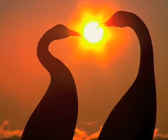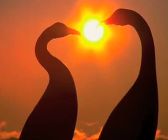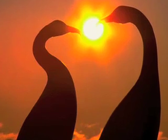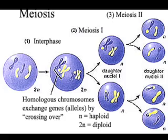In asexual reproduction, a parent cell or organism produces offspring through the cell division process of mitosis. However, a eukaryotic species may also be capable of sexual reproduction, which requires meiosis, a process in which a parent cell divides into four haploid cells, each with half the genetic material of the parent. Meiosis is composed of two steps: meiosis I and then meiosis II. Meiosis I consists of separating the pairs of homologous chromosomes into two cells, reducing the ploidy of the original cell by a factor of two. Meiosis II then consists of decoupling chromatids and segregating them into four haploid daughter cells.